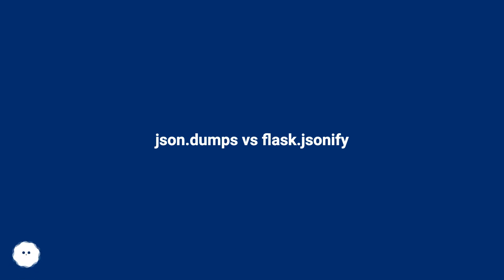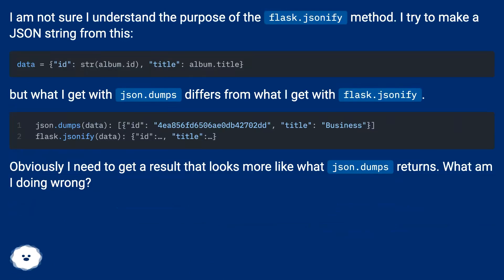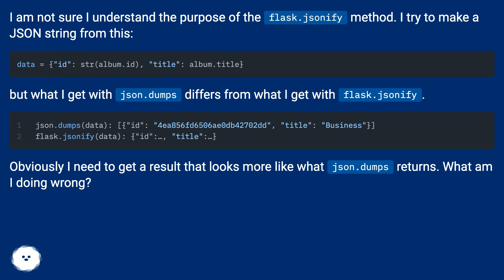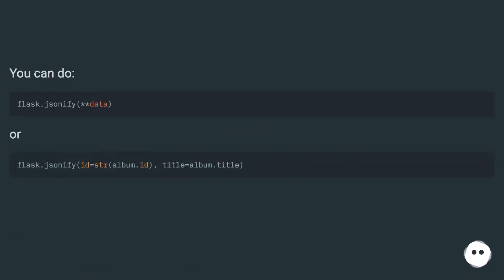json.dumps vs flask.jsonify. I am not sure I understand the purpose of the flask.jsonify method. I try to make a JSON string from this, but what I get with json.dumps differs from what I get with flask.jsonify. Obviously I need to get a result that looks more like what json.dumps returns. What am I doing wrong?